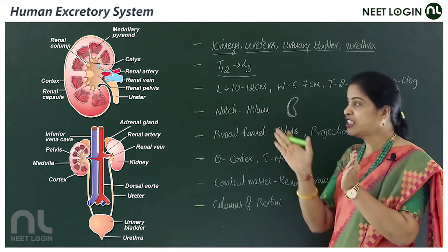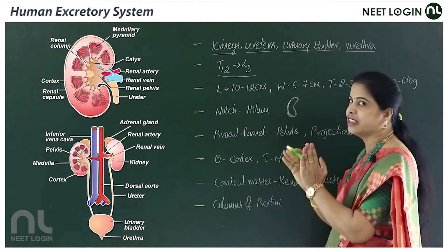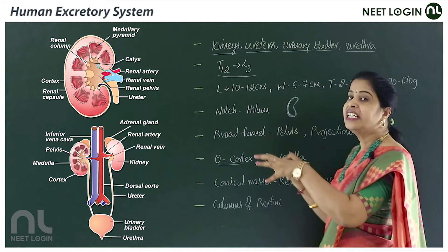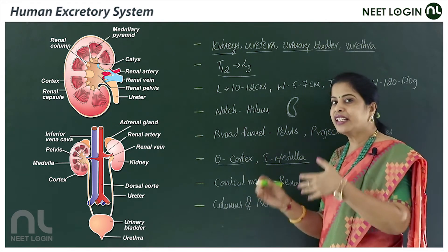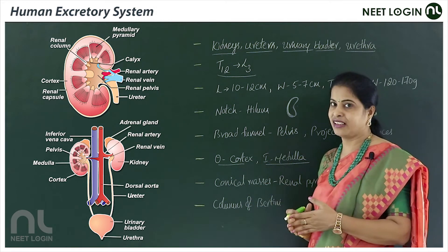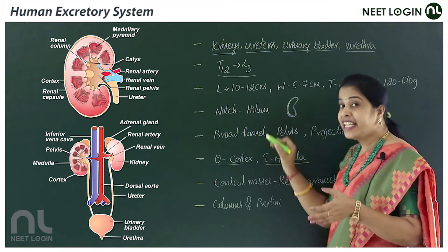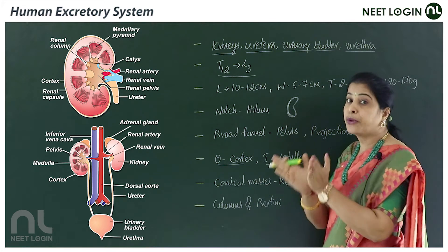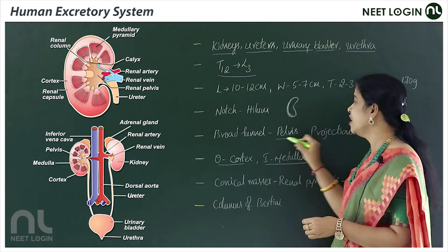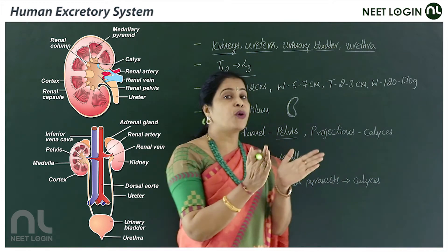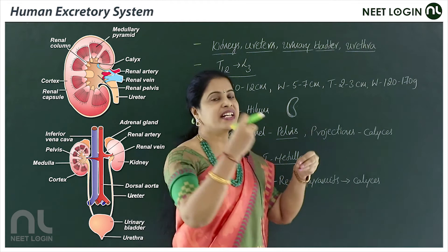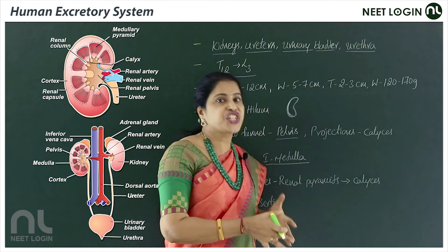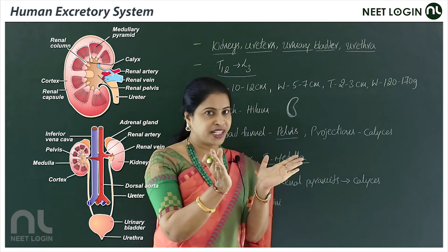In the sectional view, the outer region is the cortex — somewhat light brown in color — and the inner region is the medulla, which is darker brown. Inside the medullary region on the concavity side of the hilum, there is a broad funnel-shaped structure called the pelvis or renal pelvis, which extends as the ureter.